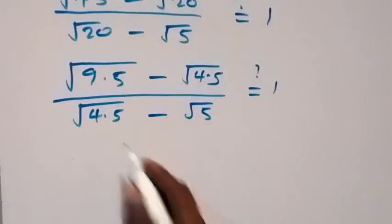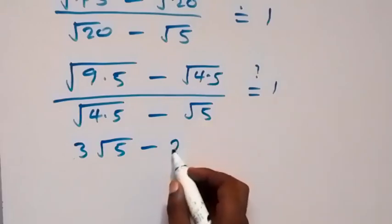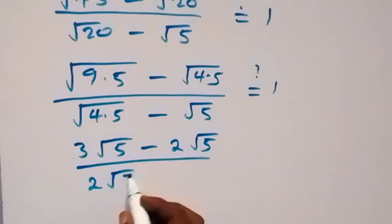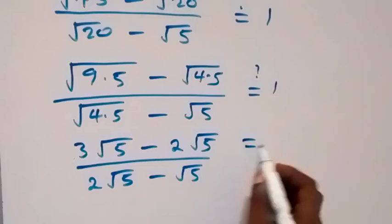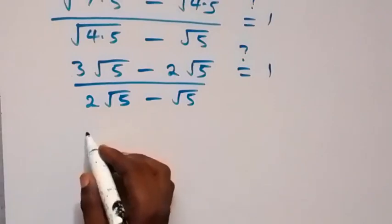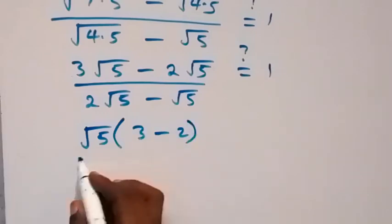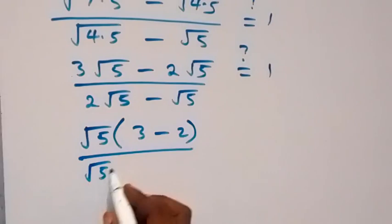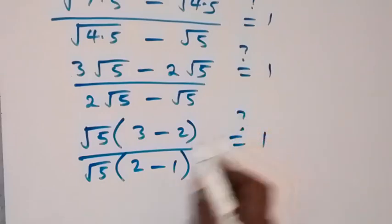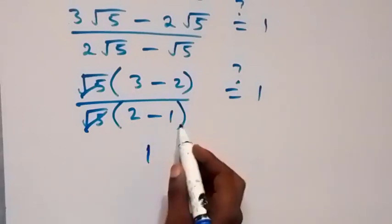Root 9 is 3, so root 45 is 3 root 5. Root 4 is 2, so root 20 is 2 root 5. Factoring root 5 from numerator and denominator: numerator becomes root 5 times (3 minus 2), denominator becomes root 5 times (2 minus 1). Root 5 cancels, giving (3 minus 2) over (2 minus 1).